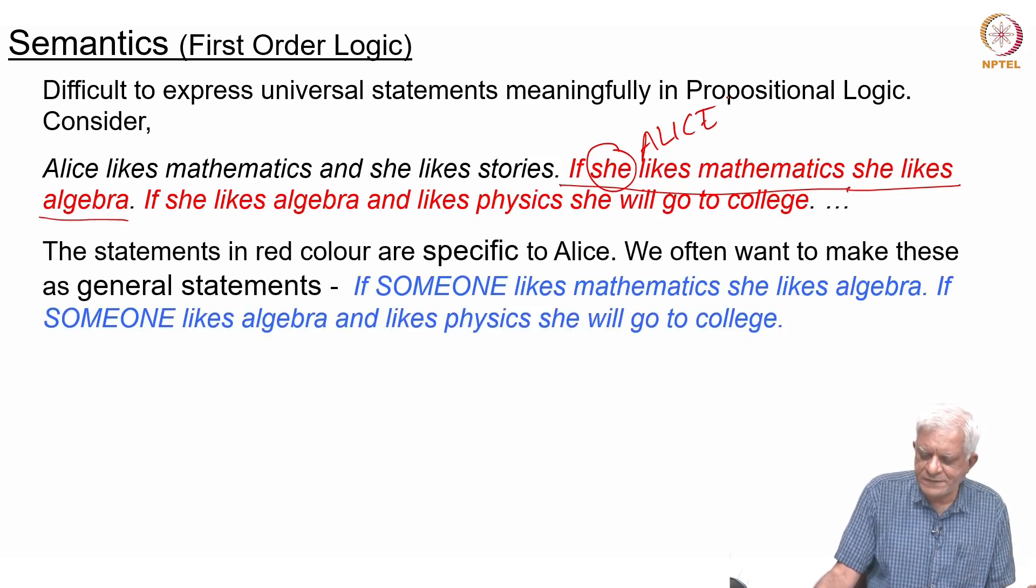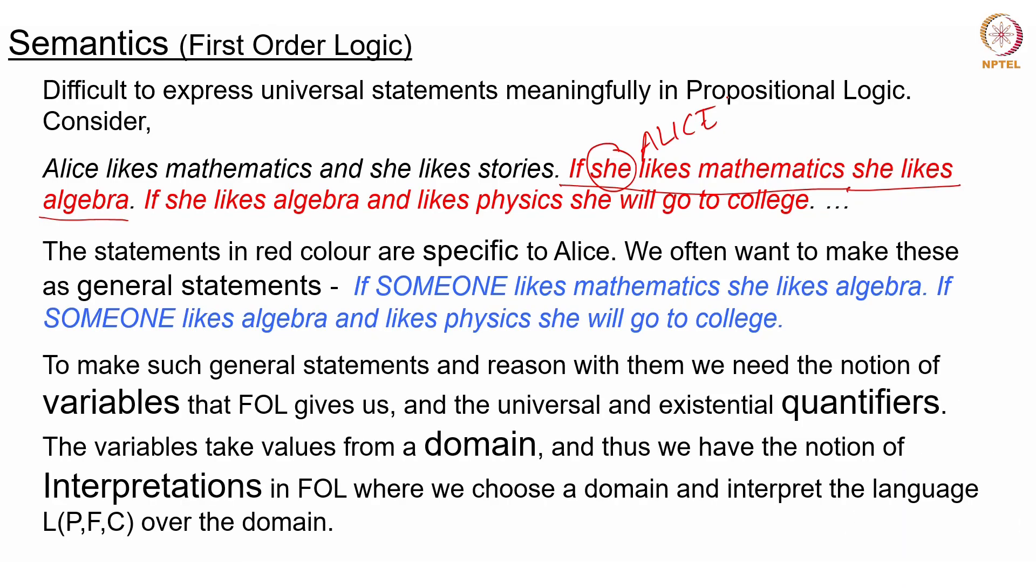We want to say something like this: if someone likes mathematics, then she likes algebra. If someone likes algebra and likes physics, then she will go to college. To make such general statements and reason with them, we need the notion of variables that first-order logic gives us and the notion of quantifiers essentially. Every man—for every x that you can think of, if x is a man then x is mortal—every man is mortal, all men are mortal.